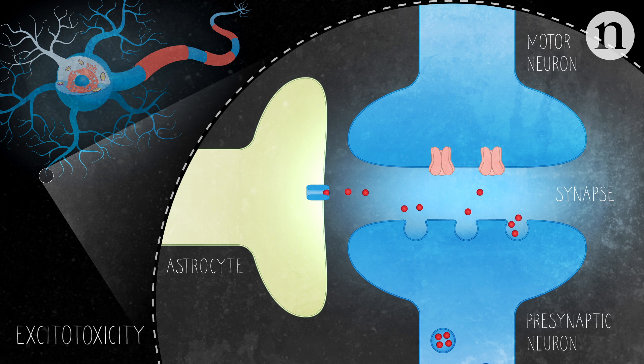Reduced uptake of neurotransmitters by astrocytes can lead to over-activation of the receptors at the synapse and death of the neuron.